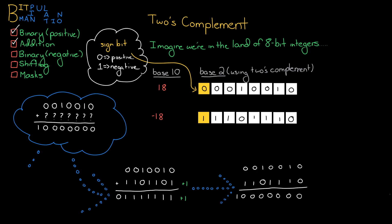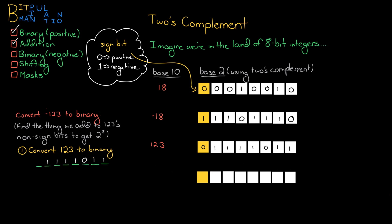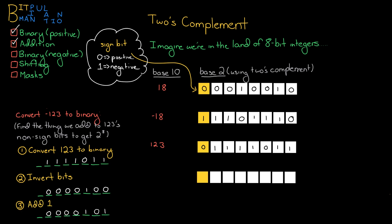So just to make sure you understand that, let's look at one more example. If we want to convert negative 123 to binary, we'd be looking for the thing that we add to 123's non-sign bits to get 2 to the 8th. So we'd take 123, convert it to binary, then invert all of the bits, and then add 1 to that, and that will give us our two's complement version of negative 123.